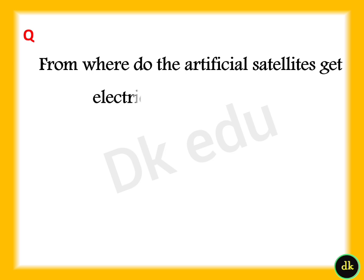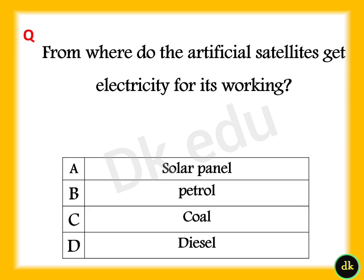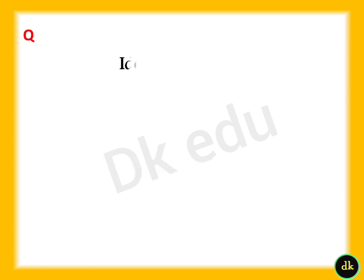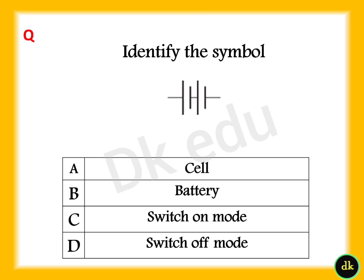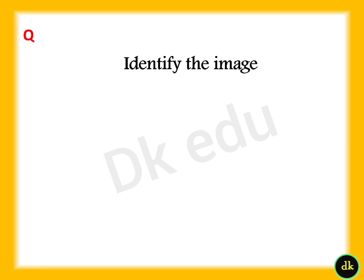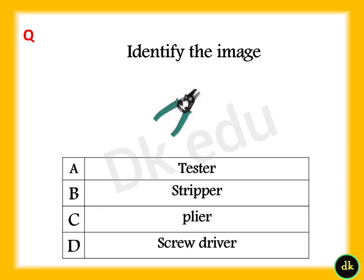Where do artificial satellites get electricity for their working? Answer: Option A, Solar Panel. Identify the symbol. Answer: Option B, Battery.